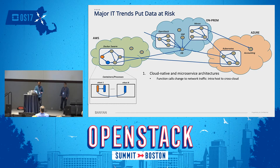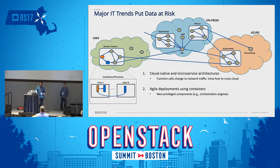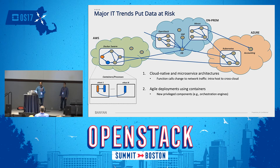Cloud-native and microservice architectures are changing function calls to network traffic, causing intra-host to cross-cloud communication. Agile deployments of containers also introduce privileged components into the system, like orchestration engines, which themselves can be sources of vulnerabilities. At RSA conference recently, they showed how a Mesos cluster can be compromised by leveraging a part of the orchestration system that wasn't secure enough.